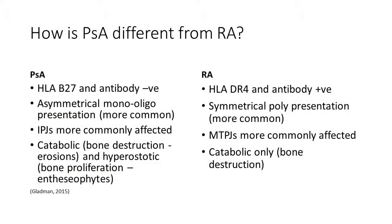How is psoriatic arthritis different from rheumatoid arthritis? Psoriatic arthritis is associated with the HLA-B27 gene allele, whereas rheumatoid is more to do with HLA-DR4. Rheumatoid arthritis tends to be antibody positive with respect to rheumatoid factor, whereas psoriatic is antibody negative. Psoriatic arthritis tends to be heterogeneous, asymmetrical, and more random and sporadic, whereas rheumatoid tends to be bilateral and symmetrical in a polyarthritic presentation. The IPJs are more commonly affected in psoriatic arthritis, whereas the MTPJs are more in rheumatoid.